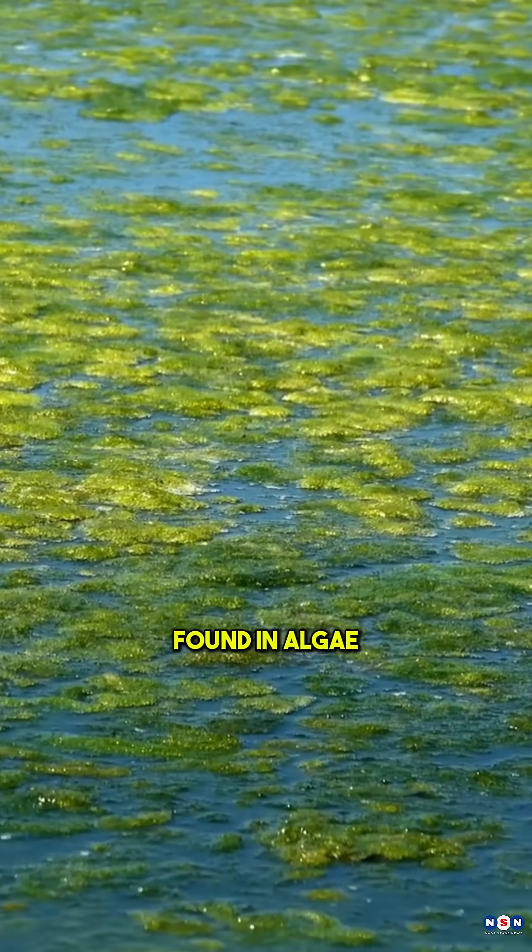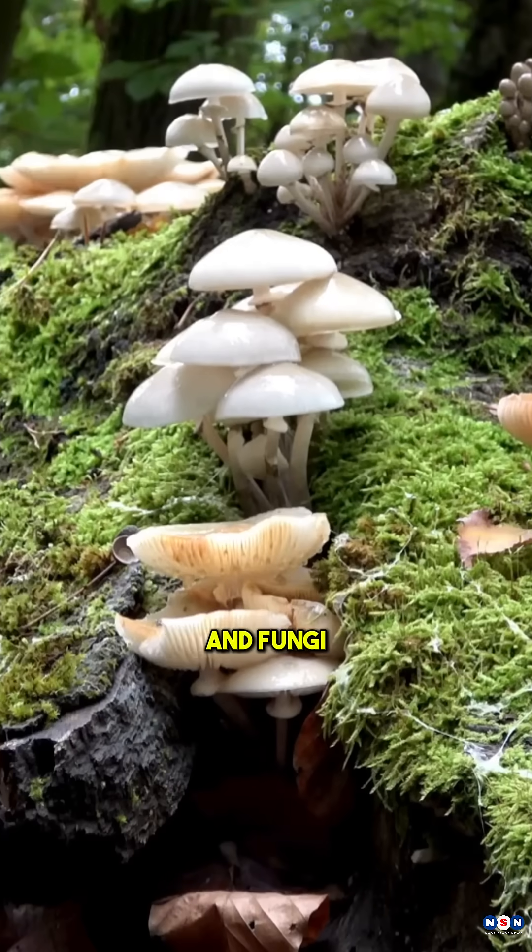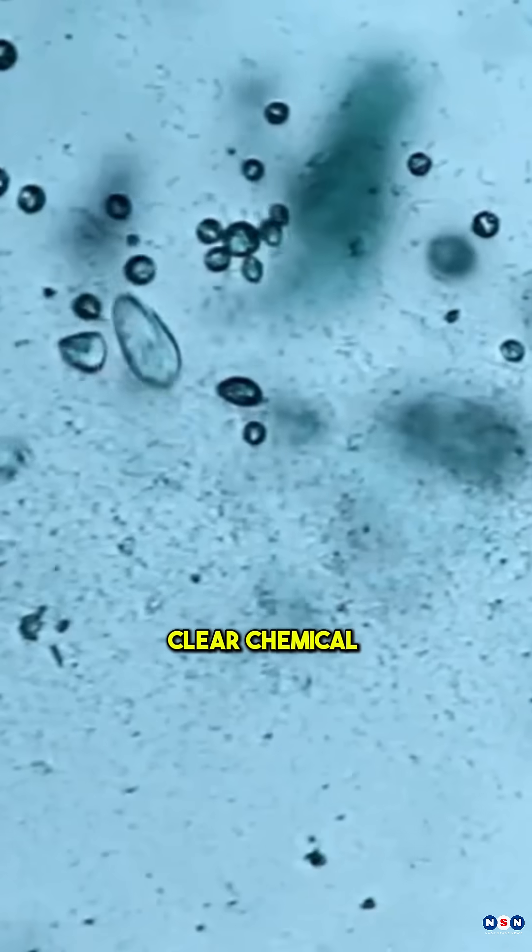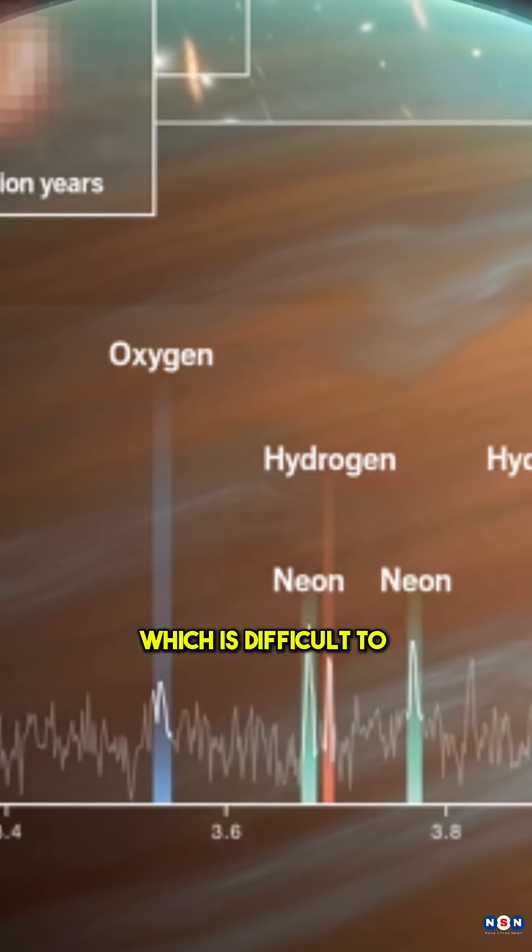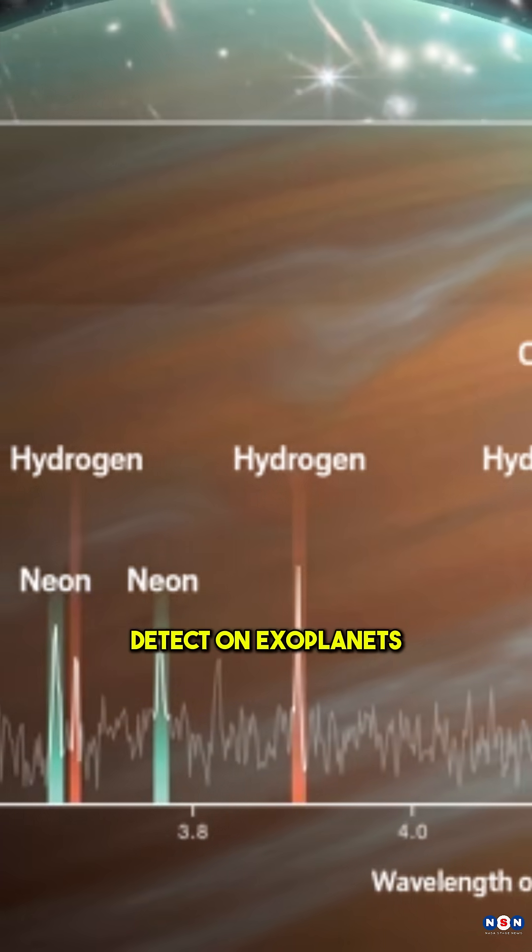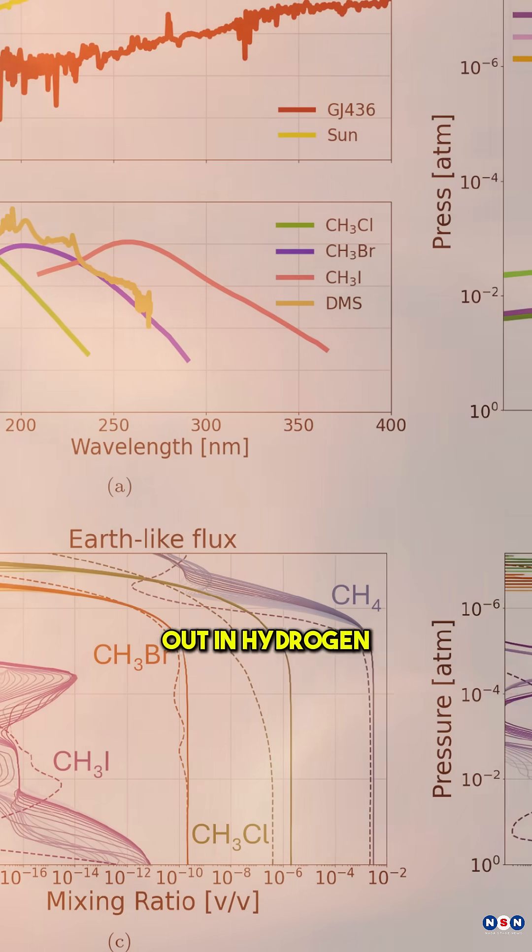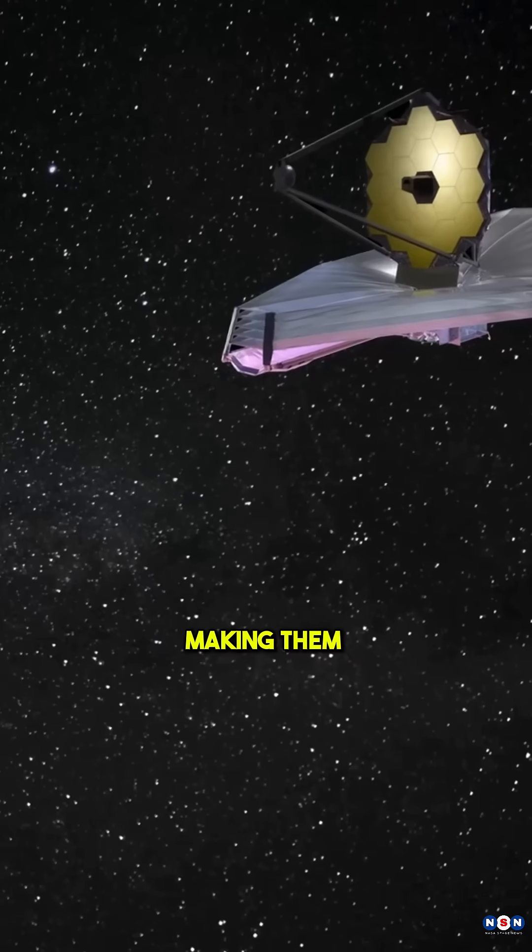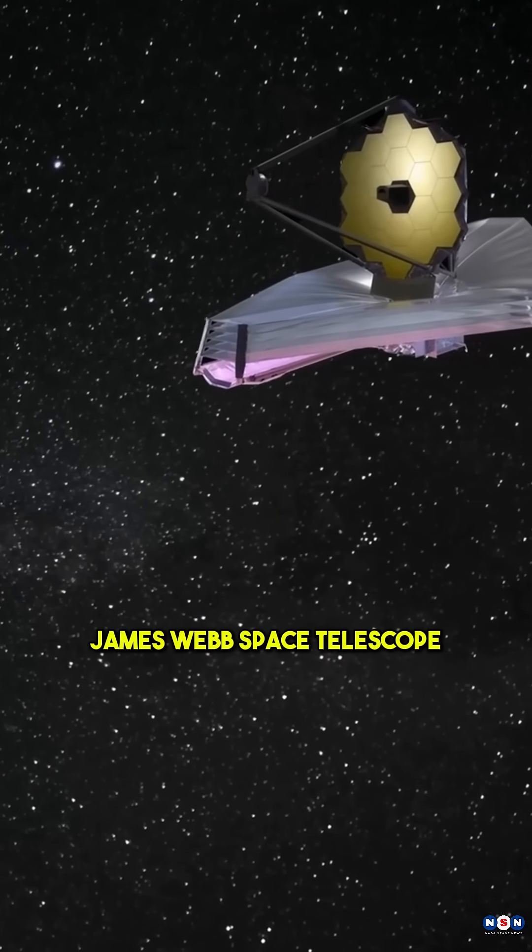These compounds, found in algae, bacteria, and fungi, could act as biosignatures, clear chemical signs of life. Unlike oxygen, which is difficult to detect on exoplanets, methyl halides stand out in hydrogen-rich atmospheres, making them easier to spot with the James Webb Space Telescope.